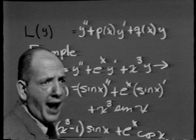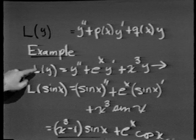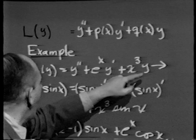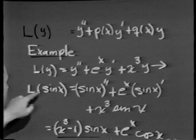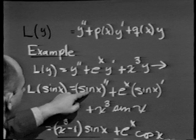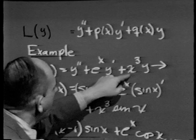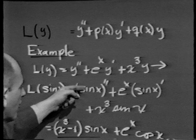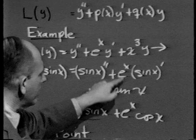Let me show you how this machine works. If the L machine is y double prime plus e to the x y prime plus x cubed y, and I feed in sine x, the L machine differentiates it twice, adds e to the x times the first derivative, and x cubed times sine x. Going through this operation, L of sine x equals x cubed minus 1 times sine x plus e to the x cosine x.